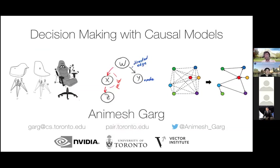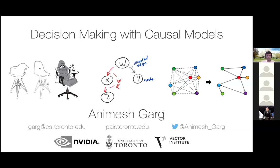Hello everyone. Good afternoon to folks in Australia and good evening to folks on the East Coast or in Europe. From wherever you are joining me, I'm very glad to have the privilege of your time. I am Animesh Garg, a professor at the University of Toronto, and I work in the area of reasoning and prediction for robot learning. Today I'm going to talk about a particularly recent line of work, which I believe is very important not just for robotics in toy domains, but for practical applications in causal systems and building applications such as space robots.